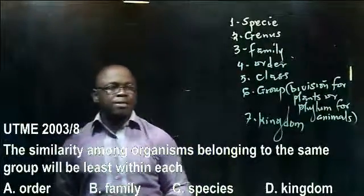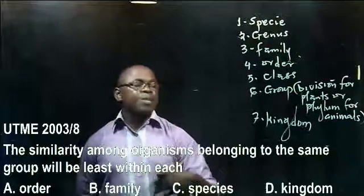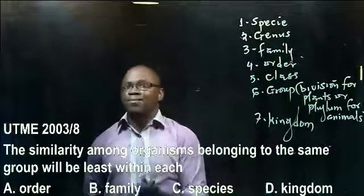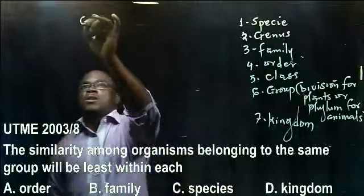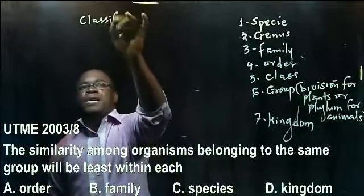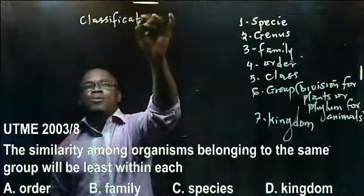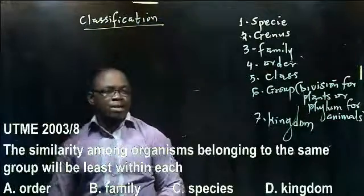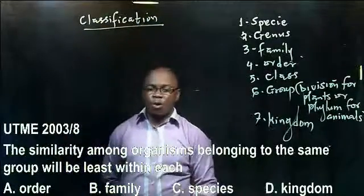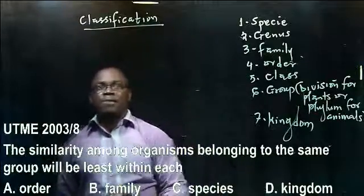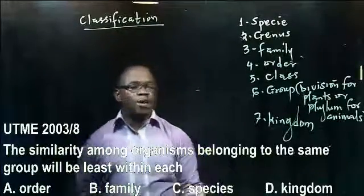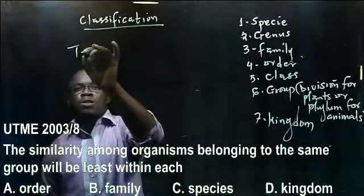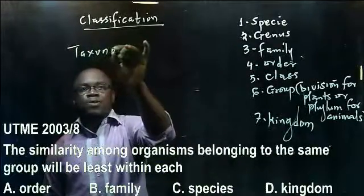The core topic here is classification. In biology, we define classification as the grouping of organisms based on characteristics which they have in common. The science of classification is called taxonomy.